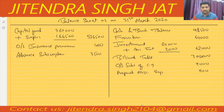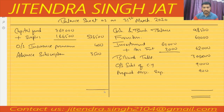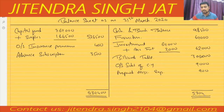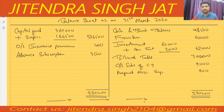Let us do the total of both sides. The total of both sides is 5,30,400. The total of both sides is equal, so the balance sheet balances. I hope this question is clear to everyone and all the points are clear.